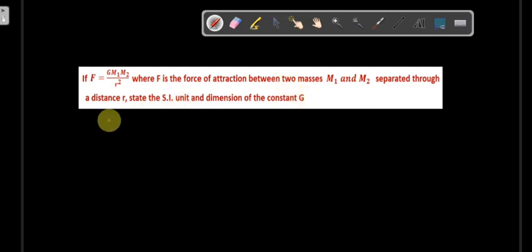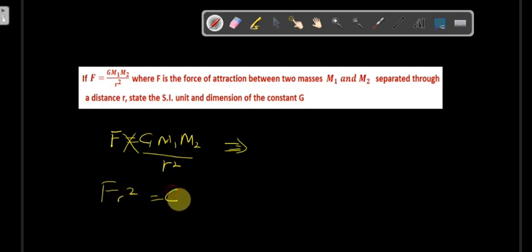So this is what I'm going to do. We can write F equals G m1 m2 over r squared. We know the SI unit of, or we can just make G the formula from here. So we cross-multiply and we have F r squared equals G m1 m2.